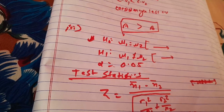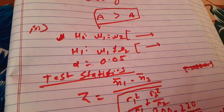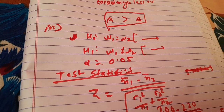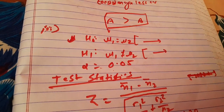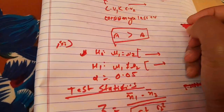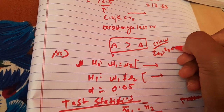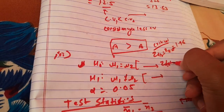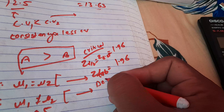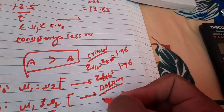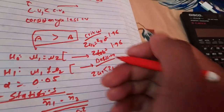This is a two-tailed test. At α = 0.05, the critical value from the Z-table is 1.96. The decision rule is: if Z calculated is less than Z tabulated (1.96), we accept the null hypothesis H0. If Z calculated is greater than Z tabulated, we reject H0.